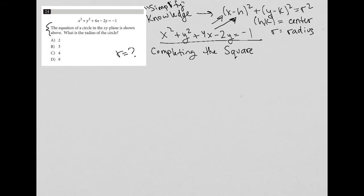So to do that, I'm going to combine my x terms together. So I have x squared plus 4x, and I'm going to leave a space. And then I have plus y squared minus 2y, I'm going to leave a space, and I have equals negative 1, and there's going to be some stuff that goes over here.